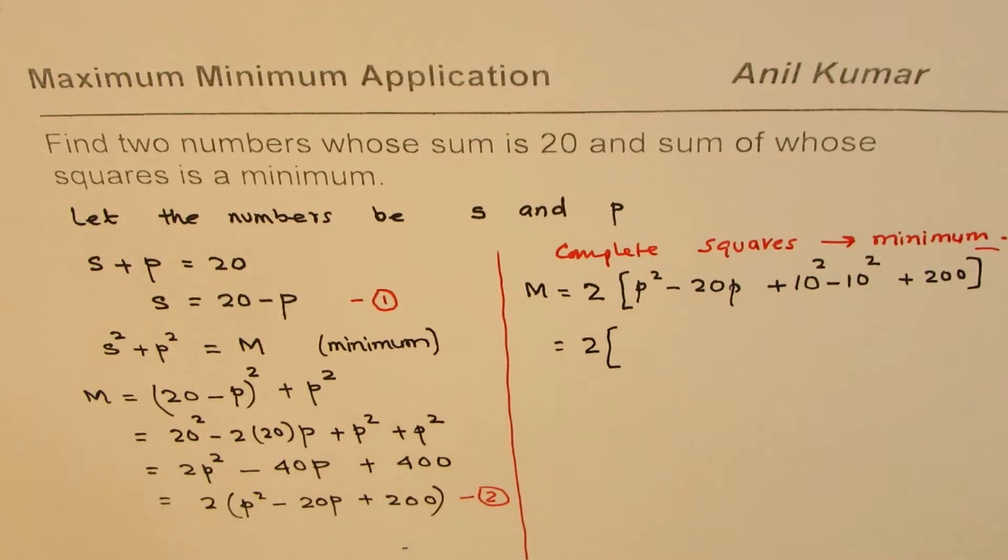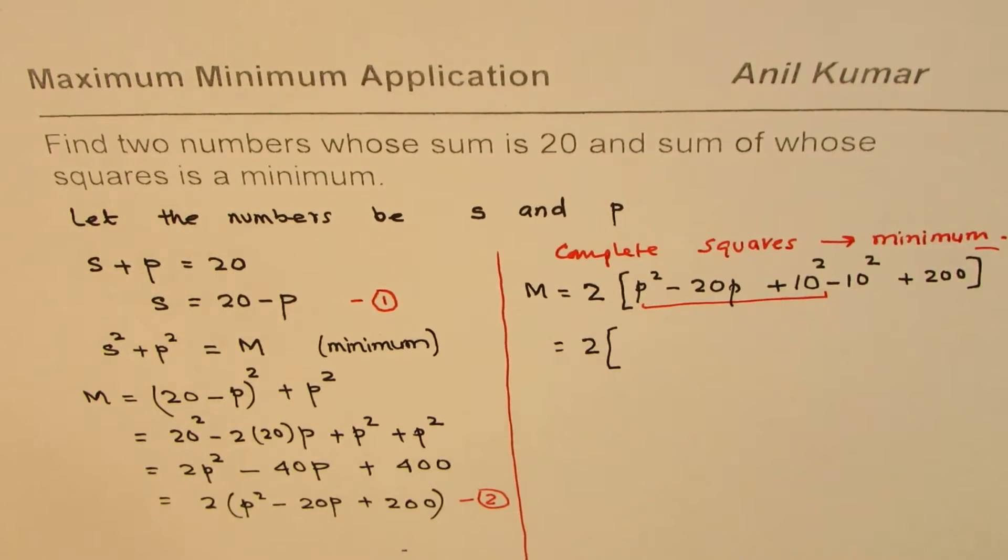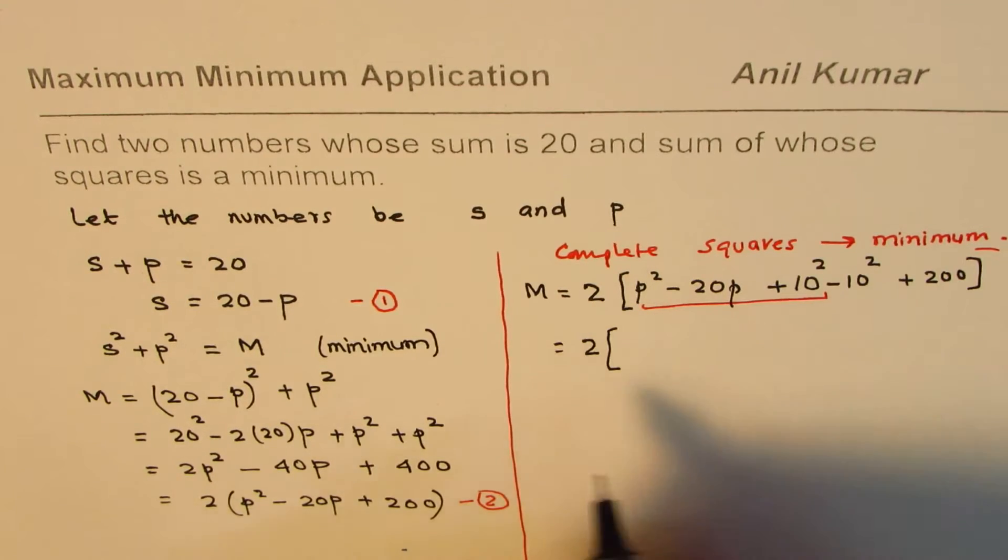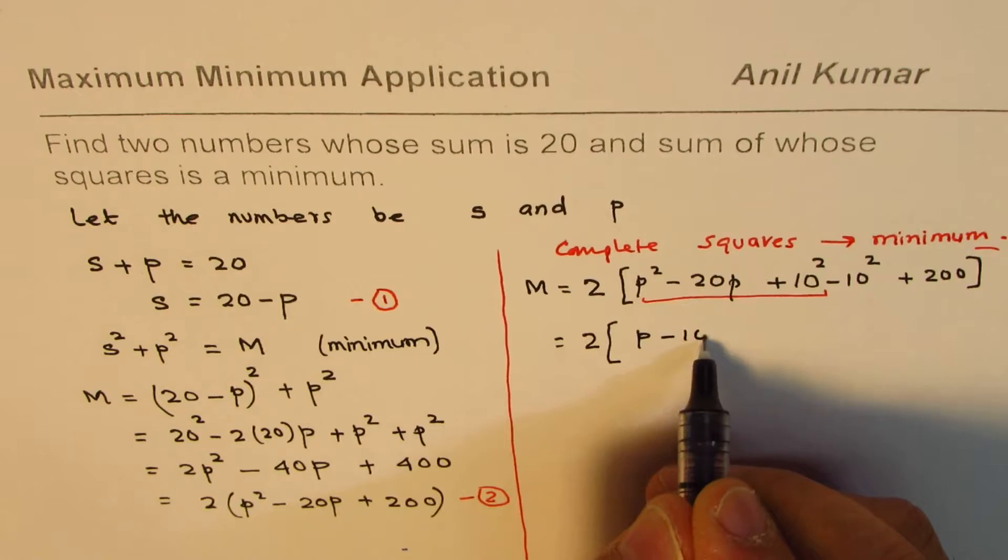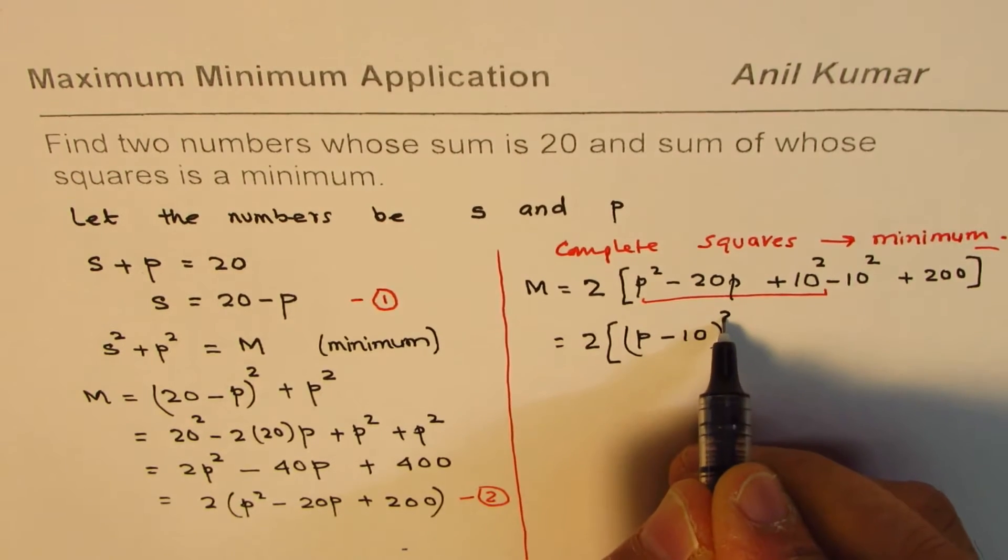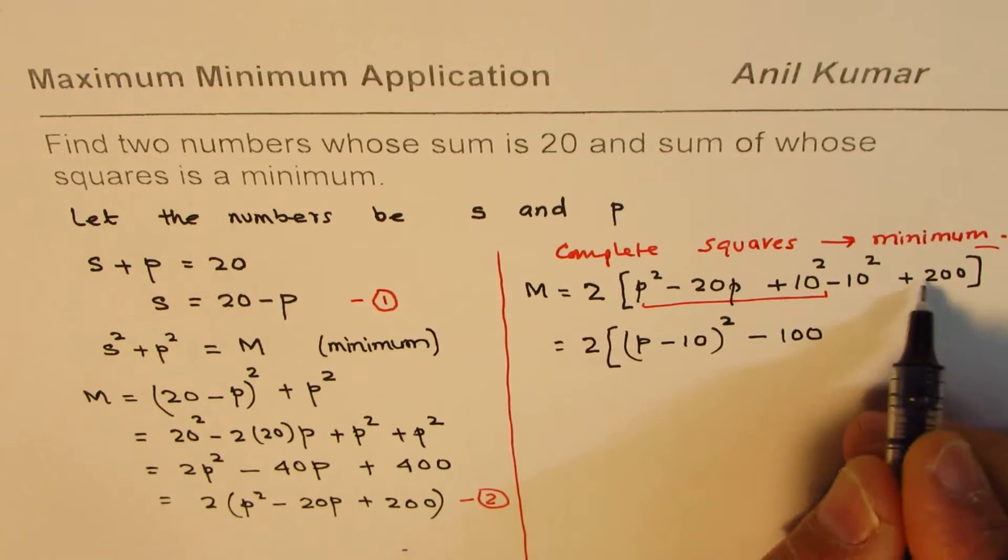These three terms form a perfect square. That's the whole idea, the process of completing squares, which is (p - 10)². Minus 10² is 100, plus 200.